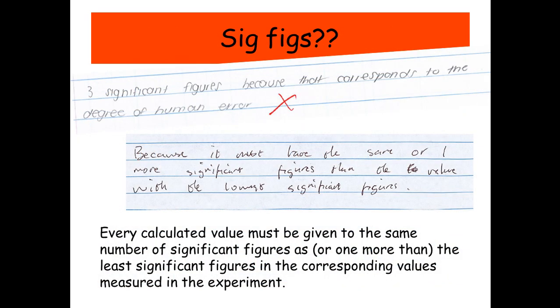Okay, and then also significant figures. Often there's a question about significant figures. Every calculated value must be given to the same number of significant figures as or one more than the least significant figures in the corresponding values measured in the experiment. So if you just remember that line verbatim, then you're on a winner.